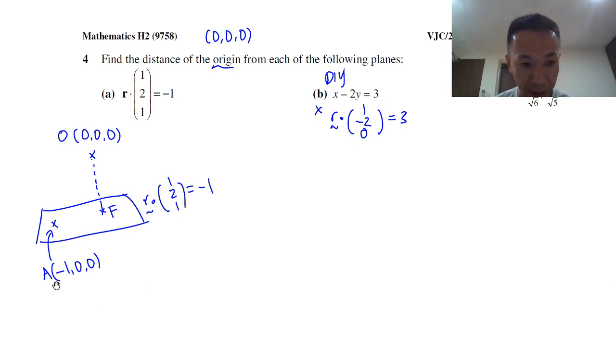Instead of (-1,0,0) you can have (0,0,-1), as long as it satisfies the equation. Doesn't matter. So now I have OA—OA is (-1,0,0).